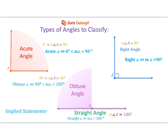Let's get re-familiar with types of angles in order to classify. You know your acute, obtuse, and right angles. Now we need to learn the implied statements that go with these. There is an implied statement for acute, one for right angles, one for obtuse, and one for straight angles. These are all listed on your implied statements pages from earlier in the unit.